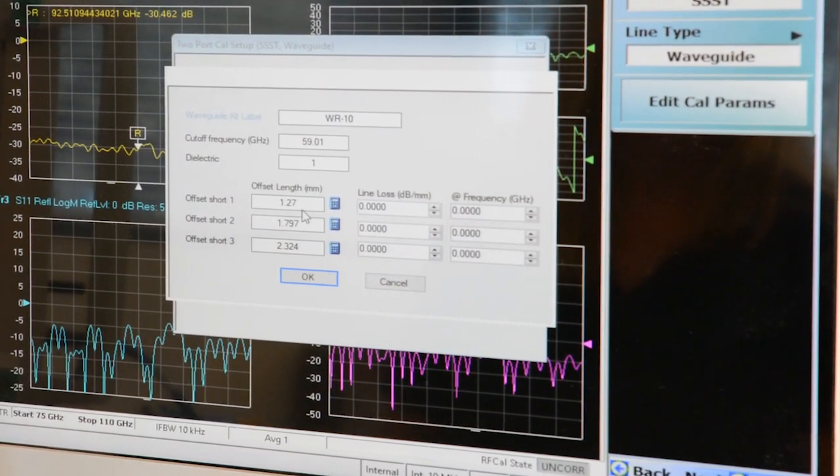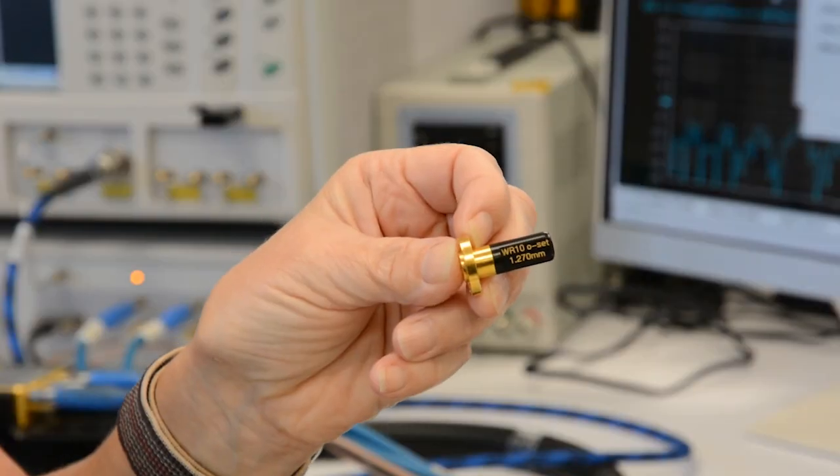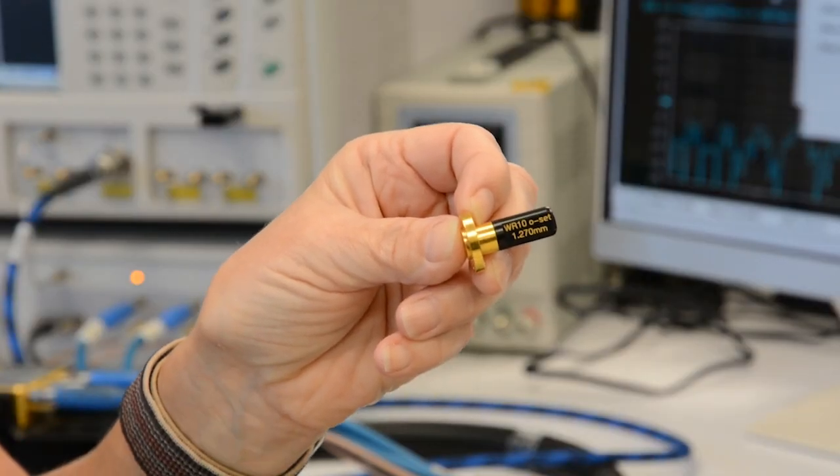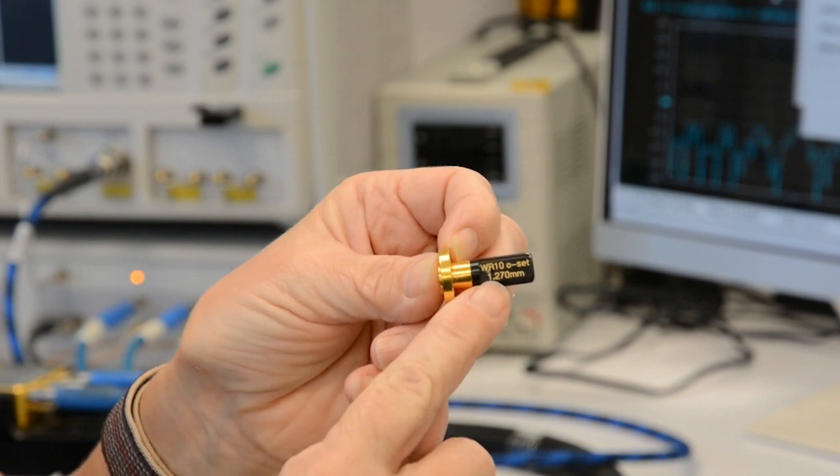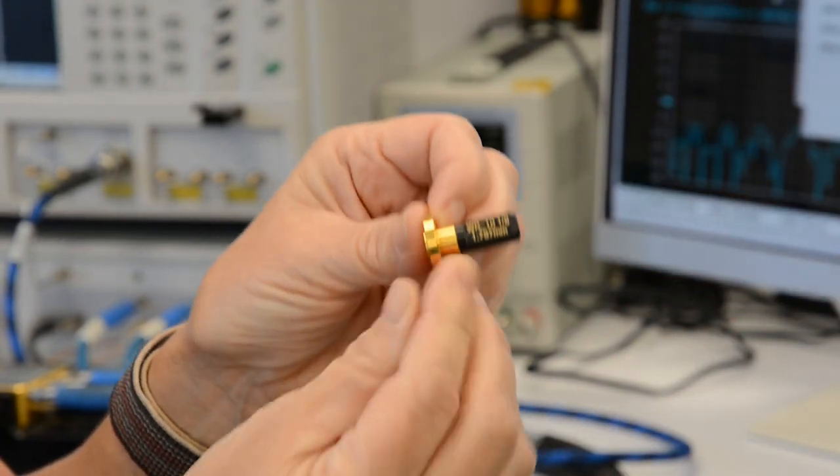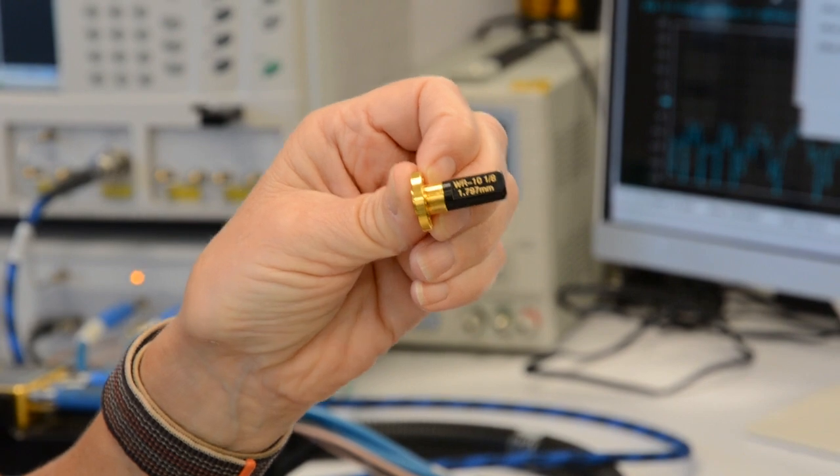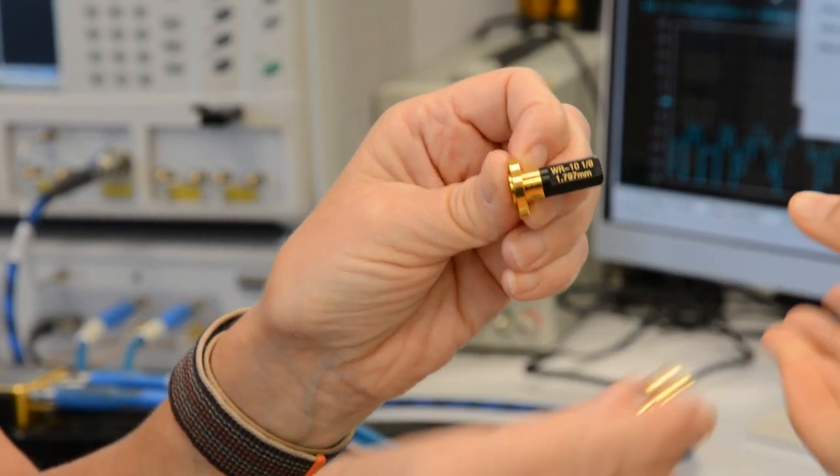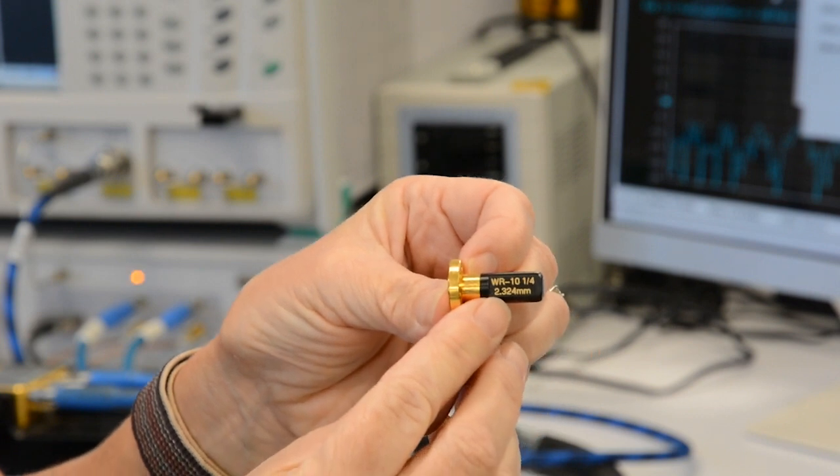And then we have our triple offset shorts. Today we are using three triple offset shorts, and the length will be written on the short for you. So this is the zero set, we have an eighth set, and a quarter inch, with all the lengths provided for you.